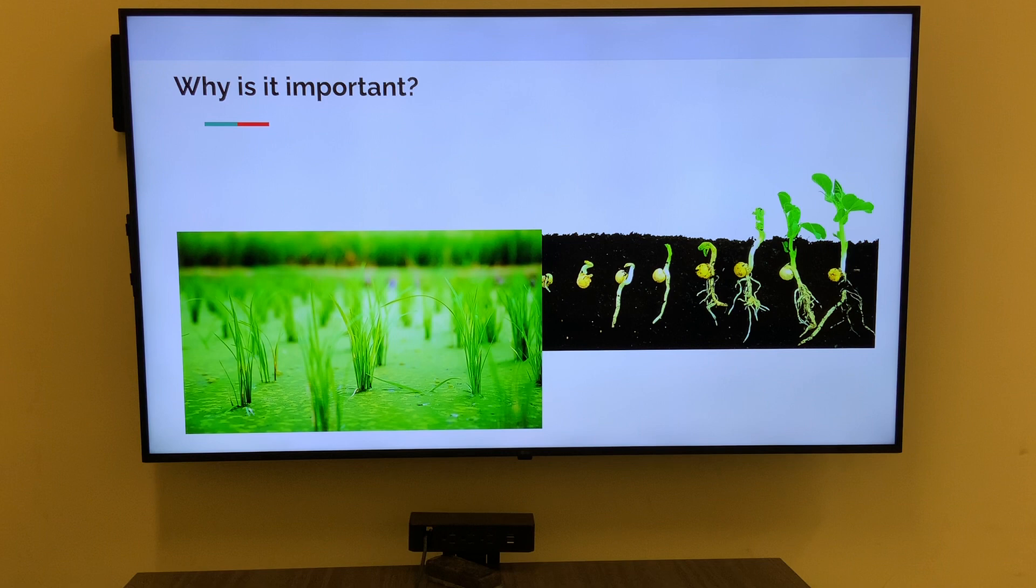One of the key biological significances of seed germination is that it is the means by which plants establish themselves and propagate their species. The seed contains all genetic information and resources necessary to produce a new plant, but it must first undergo germination in order to start growing. Successful germination results in the emergence of a seedling, which over time may develop into a mature plant capable of reproducing and generating new seeds. But seed germination is not just important for plant reproduction, it is also essential for plant growth and survival.